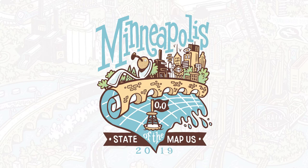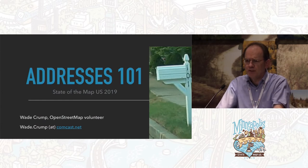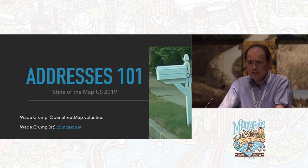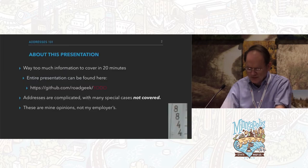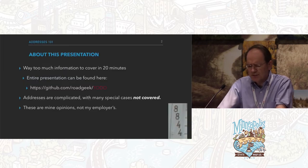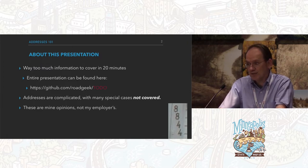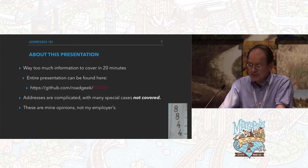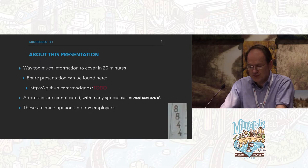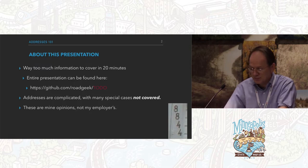Good afternoon. I hope everyone can hear me. I'm Wade Crump. I'm an OpenStreetMap volunteer, and my presentation today is Addresses 101. About this presentation, there's way too much information for 20 minutes. The entire presentation was going to be on GitHub. I forgot everything I ever knew about GitHub in the past few weeks. Addresses are rather complicated. There's a lot of special cases that I won't get into, but I'll try to throw some out there. The opinions are mine, not my employer's.